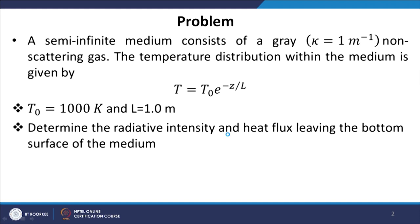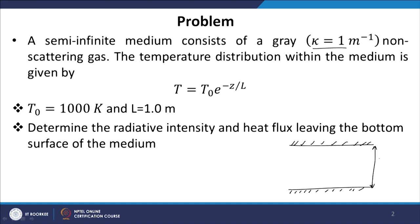We have a semi-infinite medium that consists of a gray medium — gray means the absorption coefficient is independent of wavelength — so we have an absorption coefficient in the medium in a plane parallel slab. It is semi-infinite, meaning the separation between the plates is very large. We call this infinity. This plate is located at z = 0 and the other plate is located at z = infinity. This is a semi-infinite problem.